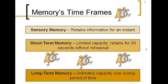Now talking about the different time frames of memory. We've talked about the steps — encoding, storage for an appropriate amount of time, and retrieval. When we're talking about an appropriate amount of time, there are three time frames for memory: sensory memory, short-term memory, and long-term memory. We'll talk about them now, and then you'll also see an illustration on the next slide.